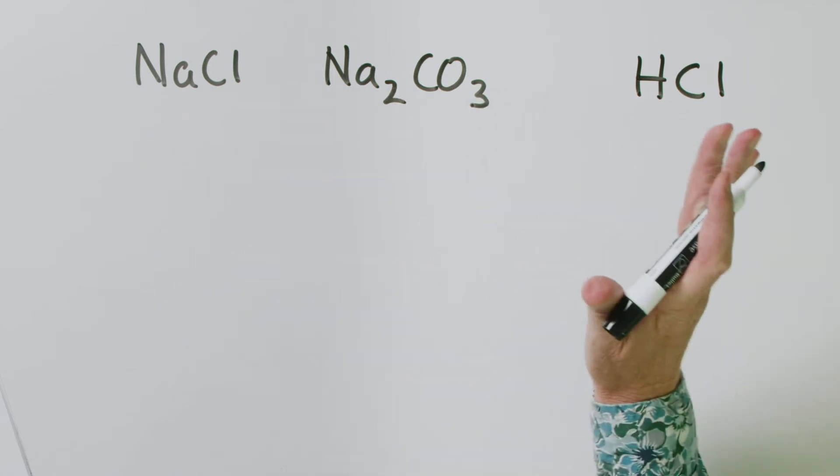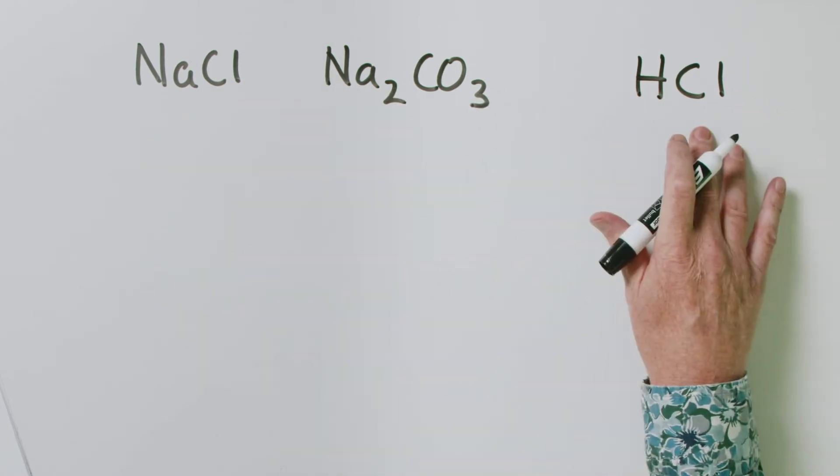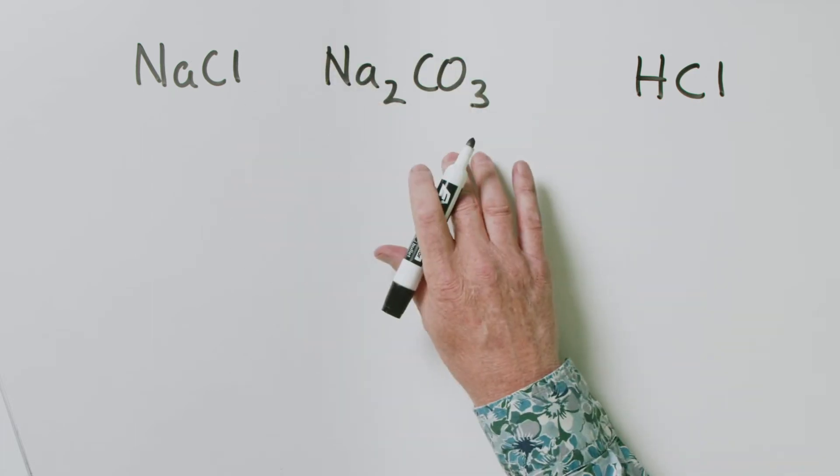Adding the HCl will react with the sodium carbonate and won't touch the sodium chloride. We don't know how much HCl to add, so we're going to add an excess — keep adding HCl until everything stops bubbling. That means all the sodium carbonate is gone, but we've also got some excess HCl. We can then titrate that excess HCl with sodium hydroxide to find out how much HCl actually reacted with the sodium carbonate. This is called a back titration.